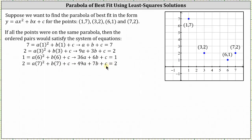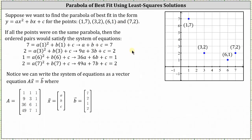Again, if all the points are on the same parabola, all the ordered pairs would satisfy the system of equations for the same values of a, b, and c. Let's also notice that we could write the system of equations in the form of matrix A times vector x equals vector b, where matrix A would be the coefficient matrix.